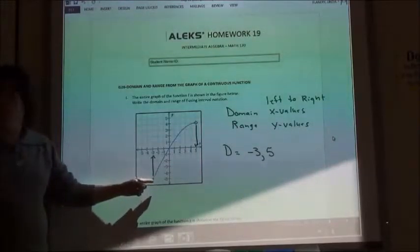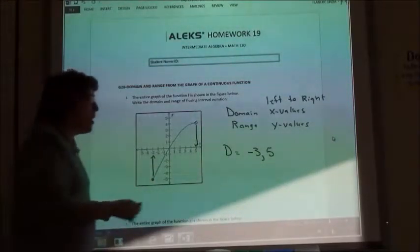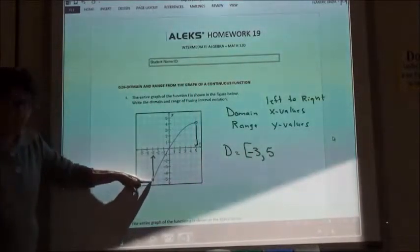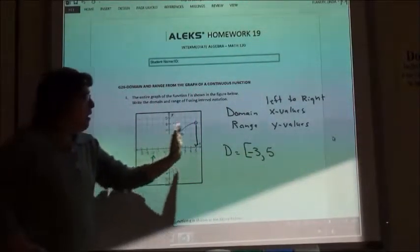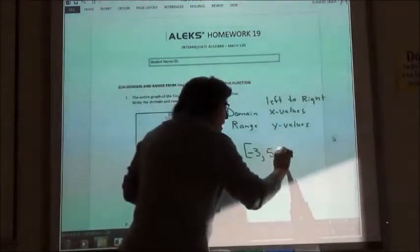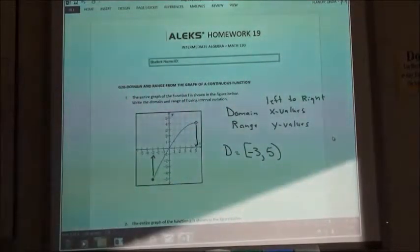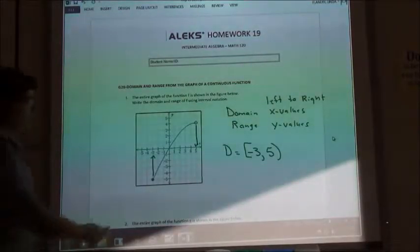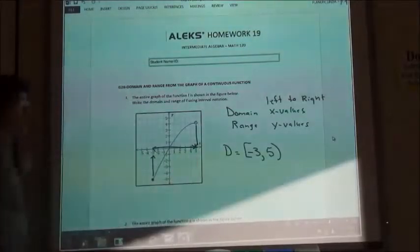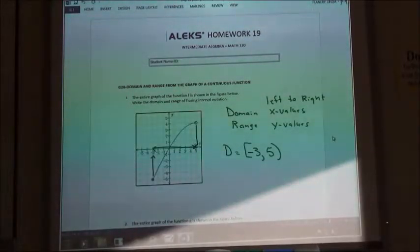If I have the filled in circle, that's when I use the bracket end mark. So on the negative 3, it's going to have a bracket because that point is filled in. On the 5, we have an open circle, so on the open circle we have the parenthesis end mark. So for my domain, I have points going from negative 3 to 5. That's how wide my graph is.